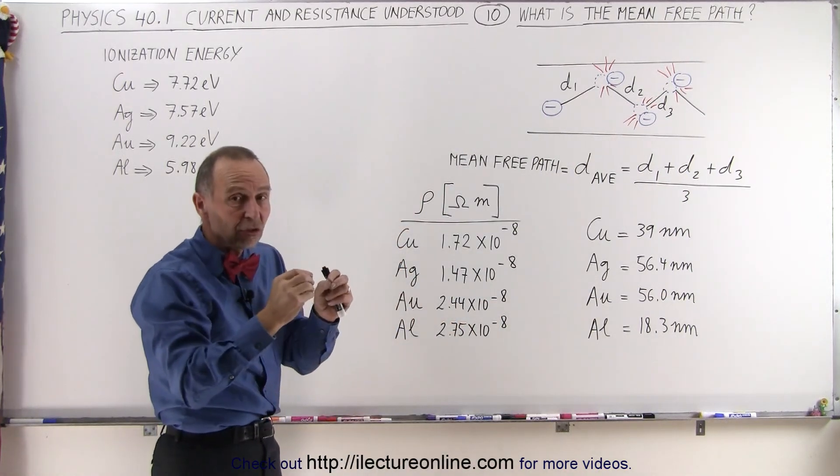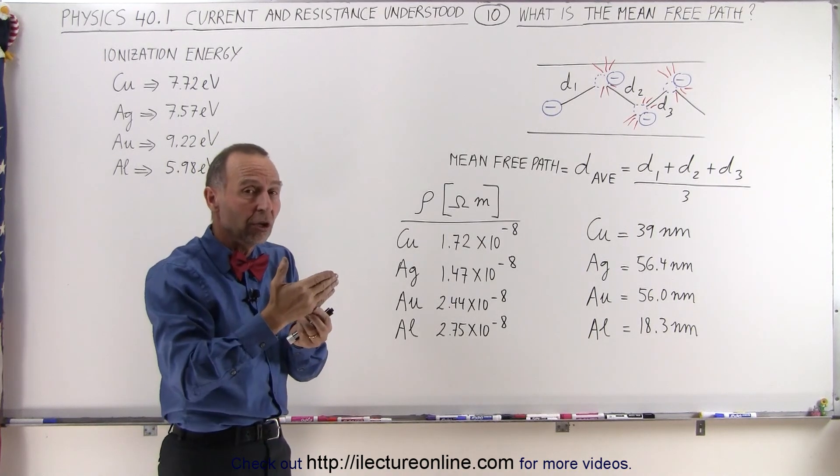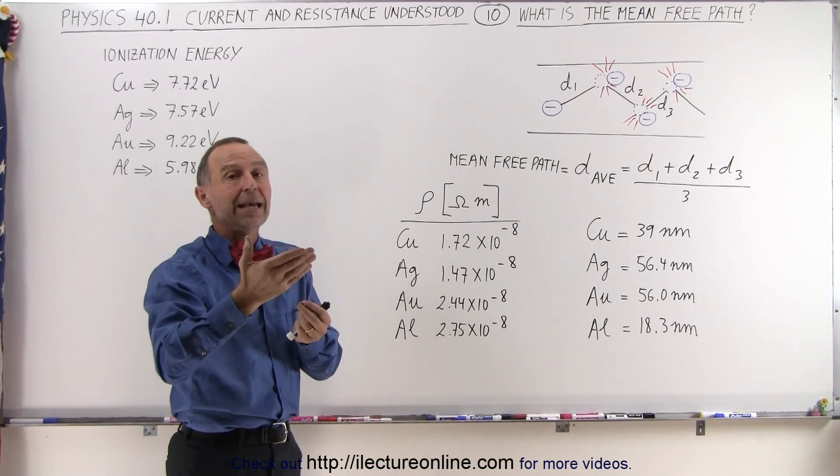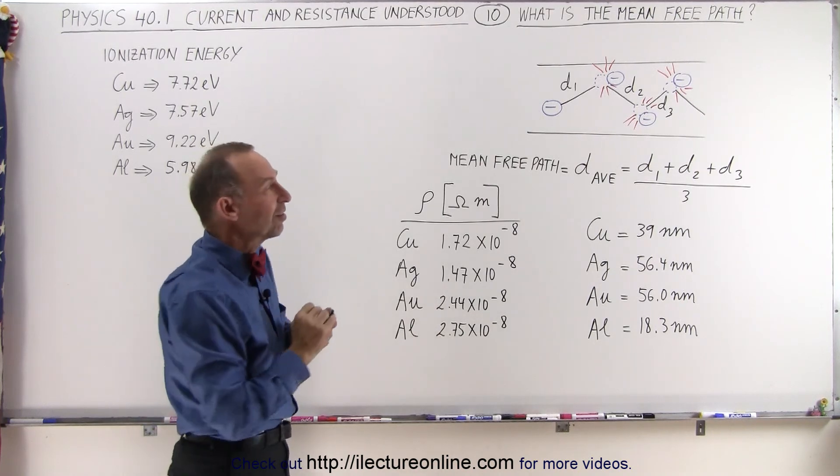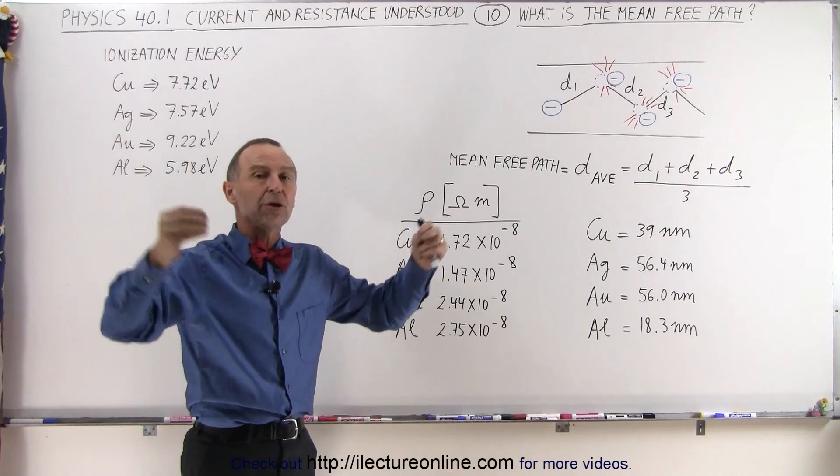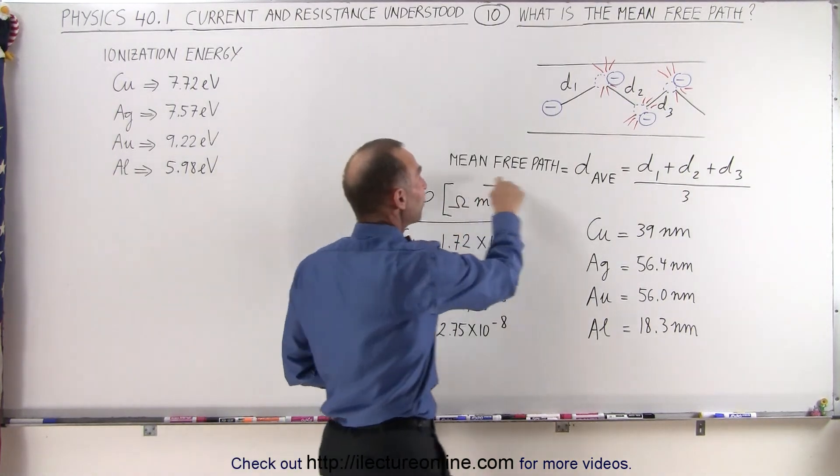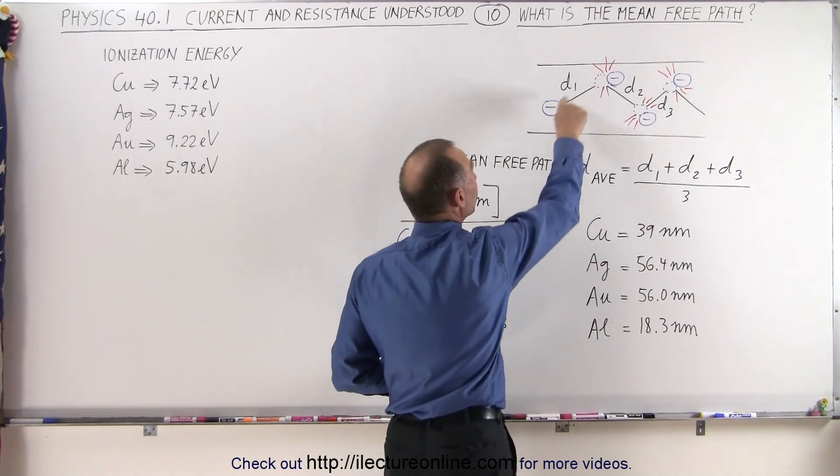The fewer the collisions, the more freely the electrons can travel through the conductor. So the fewer the collisions, the greater the conductivity and the smaller the resistivity. Now, fewer collisions is caused by having larger distances traveled before the collisions occur. So the mean-free path is the average distance between the collisions.